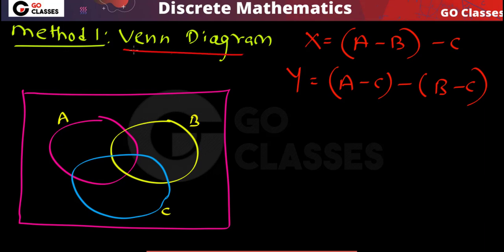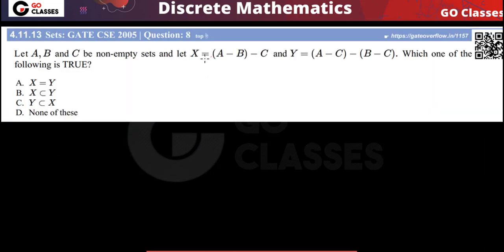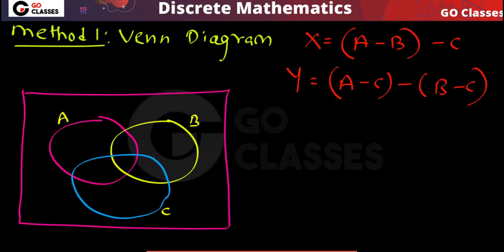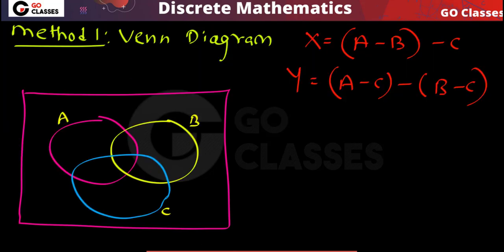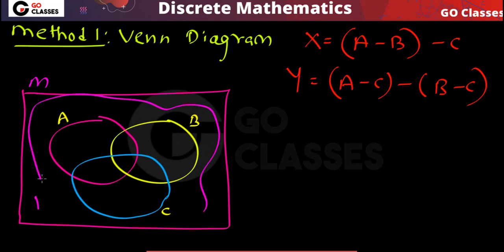Method one is the Venn diagram method. For any question related to sets, you can try this Venn diagram method. Remember, this method will not work when power sets are involved, but in this question there is no power set, so we can apply it easily. Set X is A minus B minus C and set Y is the other expression. There are three sets — A, B, C — with a universal set M.